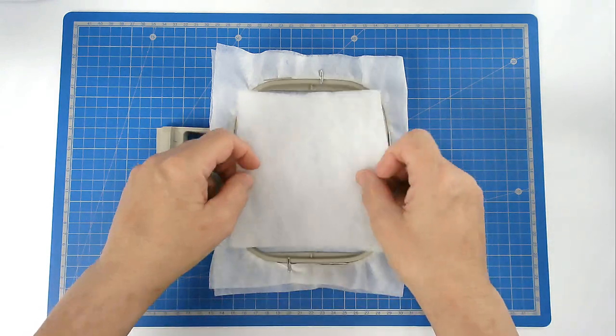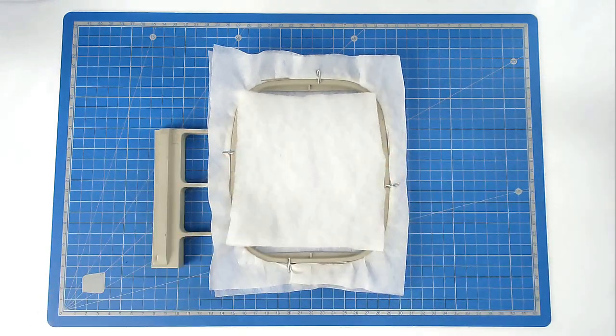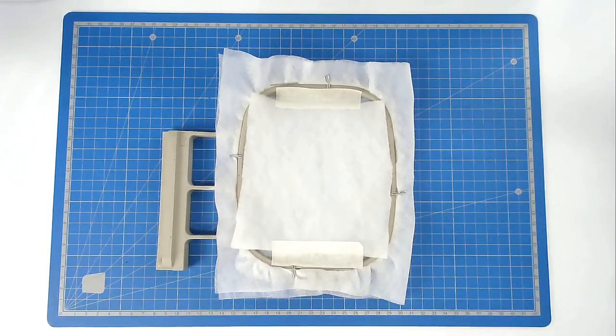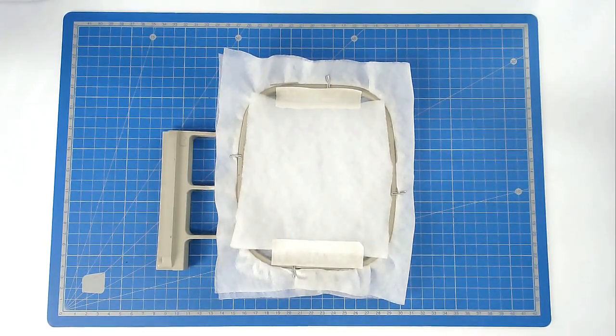Place your batting over the outline and tape it in place. Pop your hoop into your machine and stitch round number two to secure it.